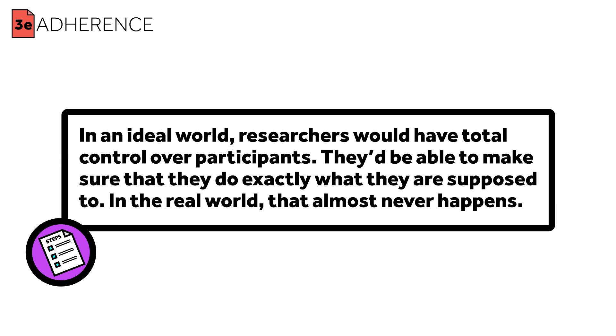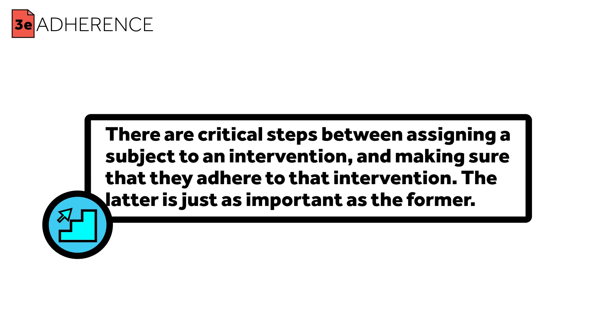In an ideal world, researchers would have total control over participants — they'd be able to make sure that they do exactly what they're supposed to. In the real world, that almost never happens. Let's take an animal model first, where you might think adherence is easy, but is it? You can assign animals to diets to see how much that might affect their weight, but they might not eat as much as you'd like. Or perhaps you assign them to a drug, but they keep vomiting it up when you're not looking. There are critical steps between assigning a subject to an intervention and making sure that they adhere to that intervention. The latter is just as important as the former.